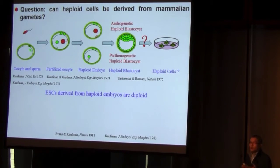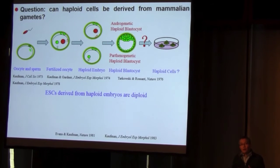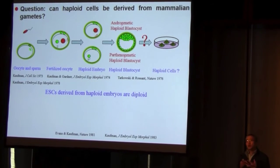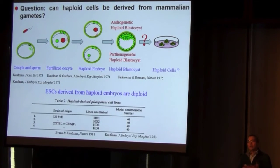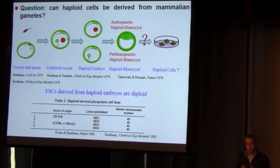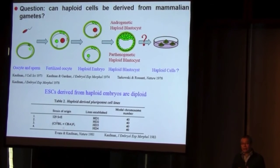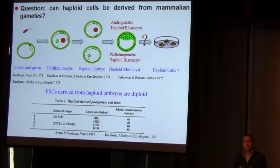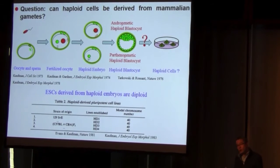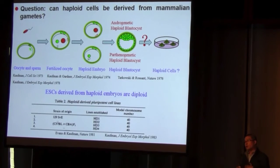So the next question is: can we derive haploid embryo stem cells from these haploid embryos? Actually, this has been an open question for more than 40 years. In 1981, Evans and Kaufman generated the first embryo stem cells from mouse — work that was awarded the Nobel Prize in 2007. Shortly after that, the same group tried to establish haploid embryo stem cells from haploid embryos. They did make four cell lines.